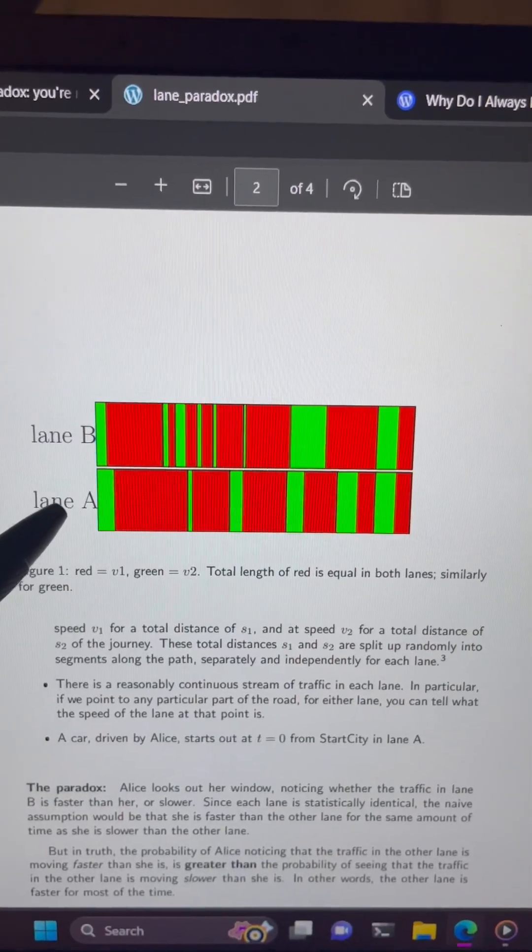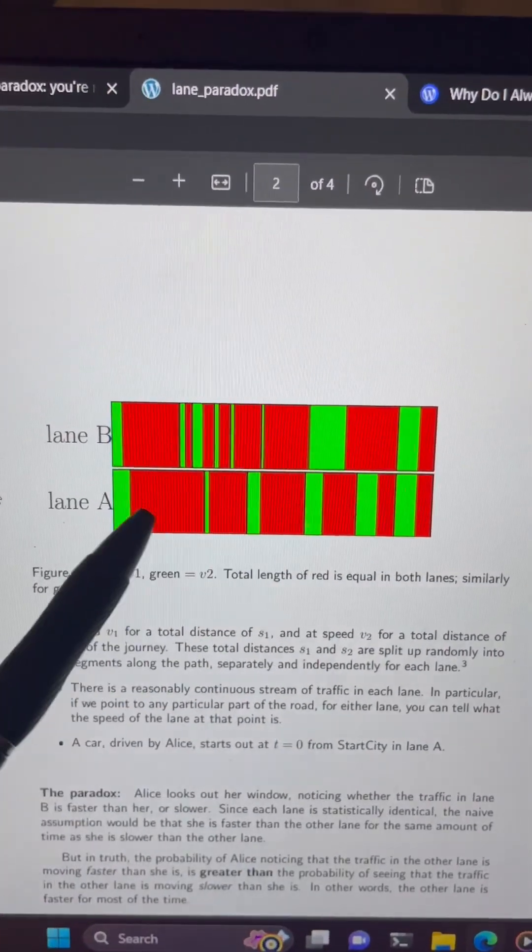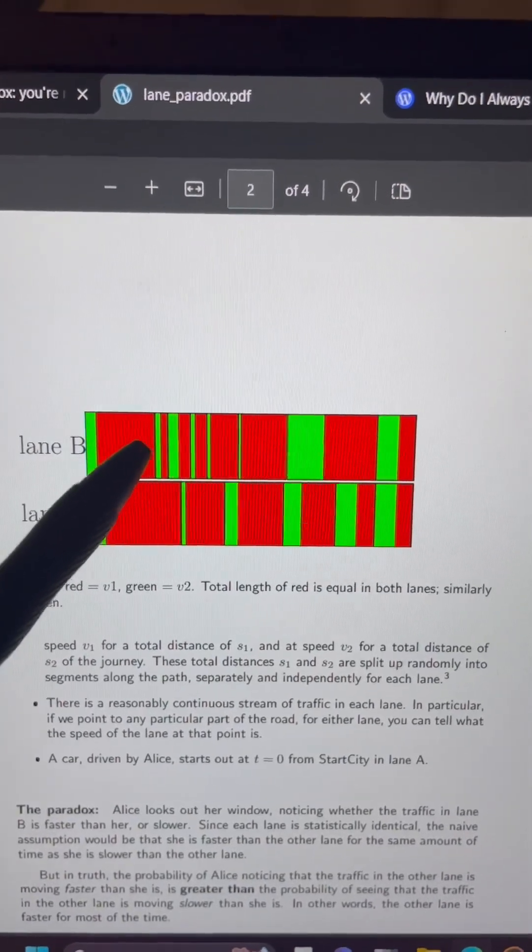Consider there are two lanes that you're driving in, lane A and lane B, in which both lanes are equally likely at any point to be either fast, represented in green, or slow, represented in red.